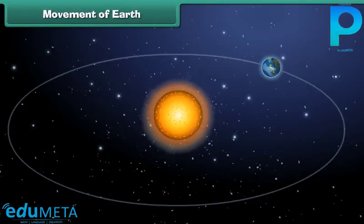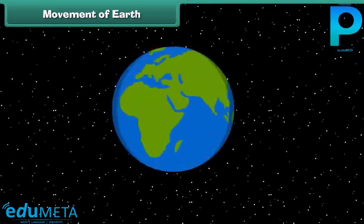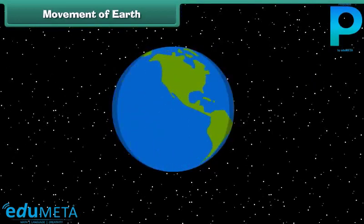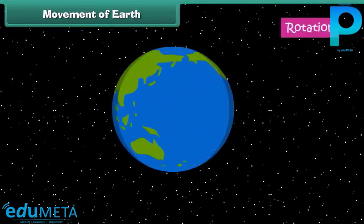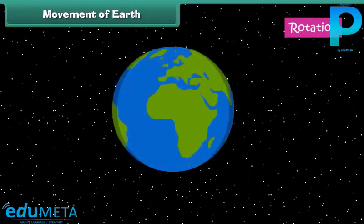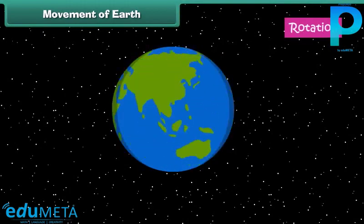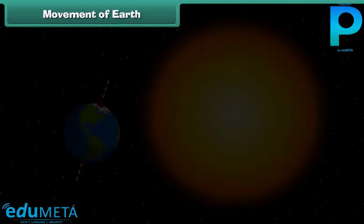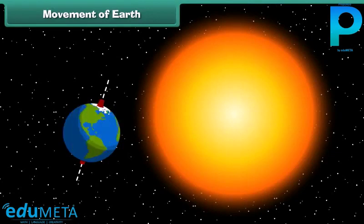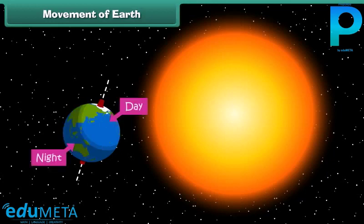Besides going around the Sun, the Earth spins on its own axis like a top. This is called rotation. Earth completes one rotation in 24 hours. During Earth's rotation, one half of the Earth faces the Sun and the other half faces away from the Sun. The former experiences day and the latter night. Therefore, Earth's rotation causes day and night.